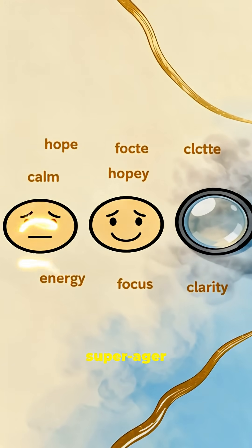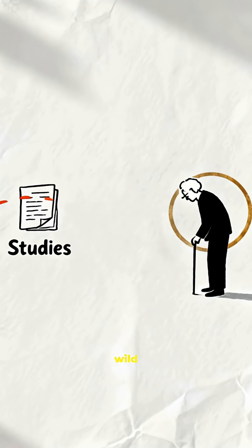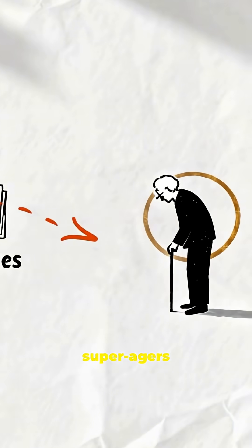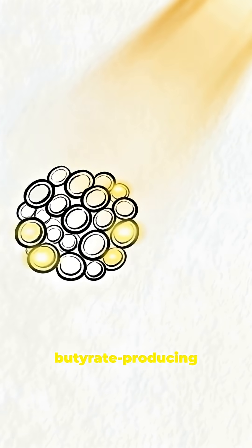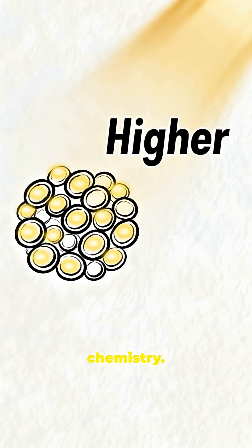Longevity. The superager secret. Here's the wild part. Studies show that superagers, people who stay youthful into their 80s, 90s, even 100s, have one thing in common. Higher butyrate-producing bacteria. Not better genetics, better gut chemistry.